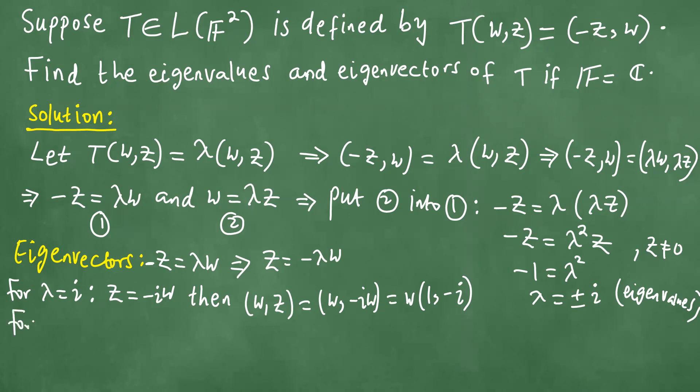Similarly, for λ = -i, it follows that z = -λw. Substituting λ = -i gives us z = iw. The eigenvector (w,z) becomes (w, iw), which equals w times (1,i).